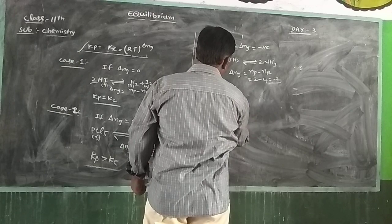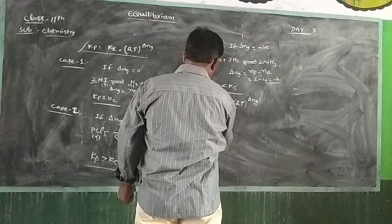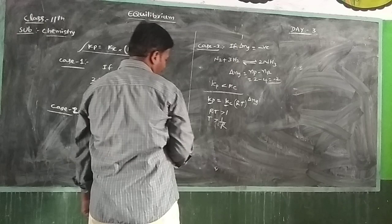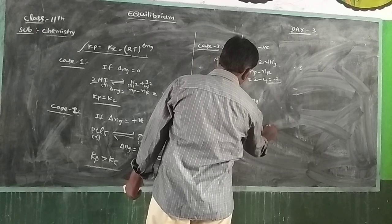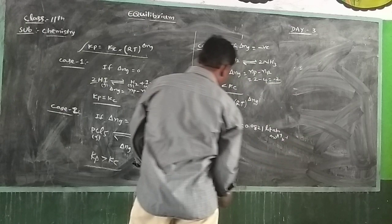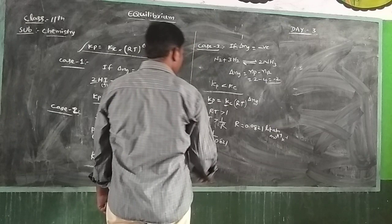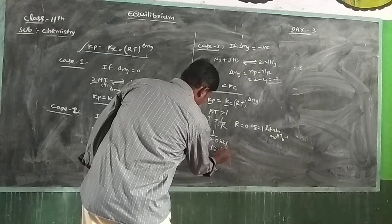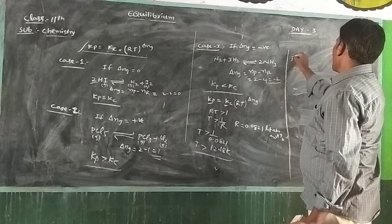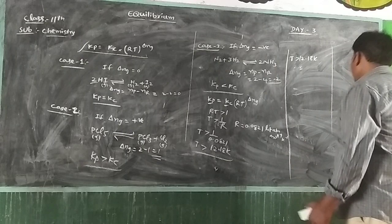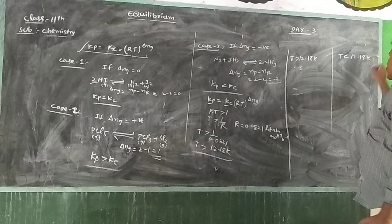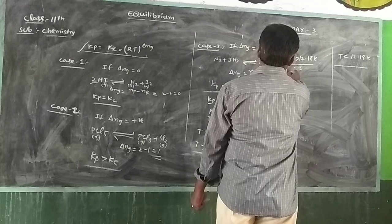Since Kp equals Kc·(RT)^ΔNg, we need RT greater than 1. R is the universal gas constant, 0.0821 L·atm·mol⁻¹·K⁻¹. So the condition RT > 1 gives temperature greater than 12.18 Kelvin. These cases apply when temperature is greater than 12.18 K.